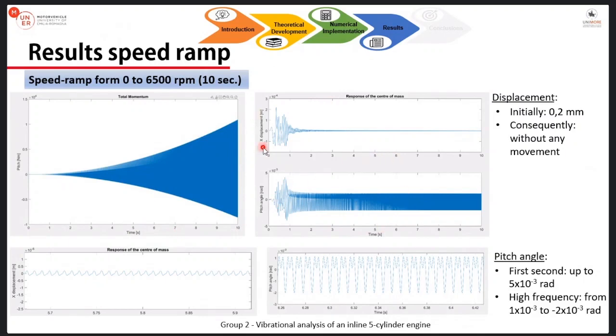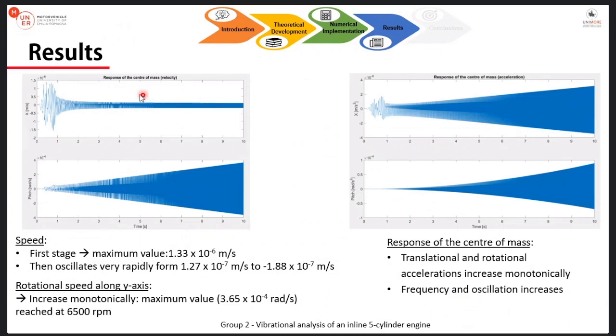The displacement of the center of mass. We had an x displacement and a pitch angle. Out of the initial six degrees of freedom, only two were relevant. The other four were not relevant, were not high enough to be considered. The displacements shown are shown here and this is a zoom in order to show better the exact behavior that these functions have. After that, we got the response, the center of mass in terms of velocity and acceleration in these 10 seconds of transient.